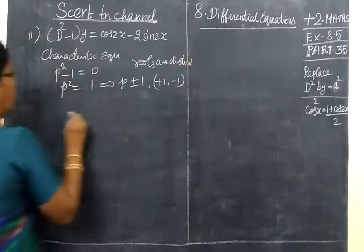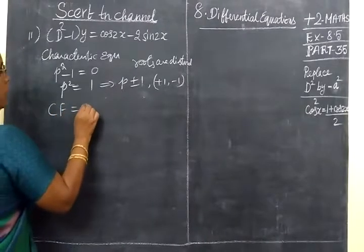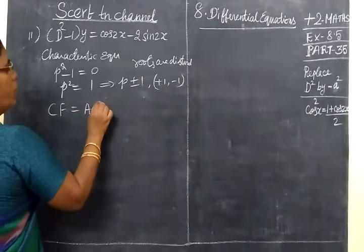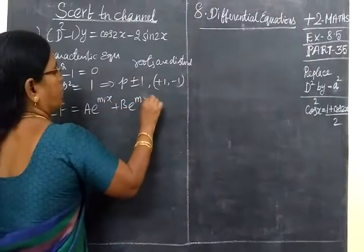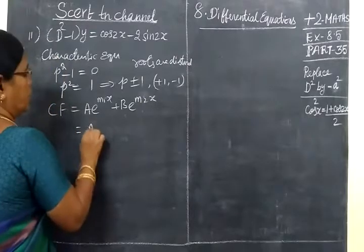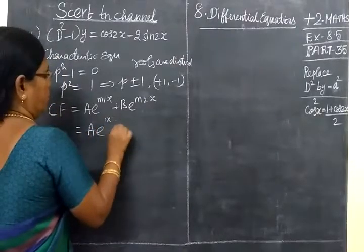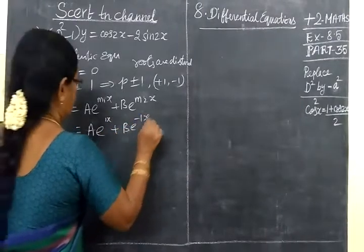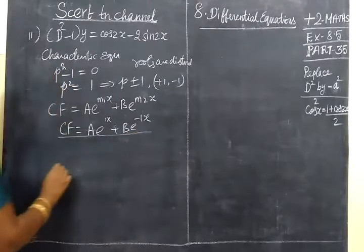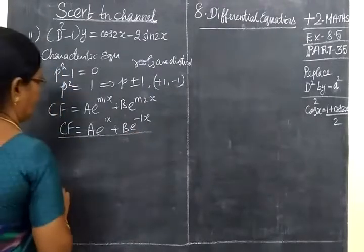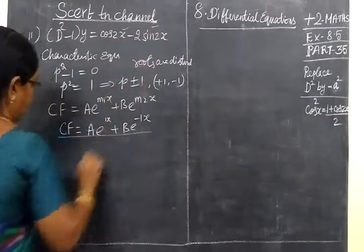We know the complementary function CF = Ae^(m₁x) + Be^(m₂x) = Ae^x + Be^(-x). After finding the complementary function, we have to find the particular integral.